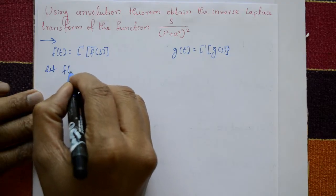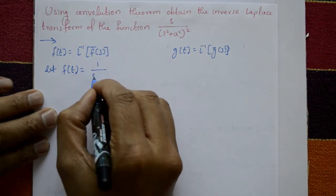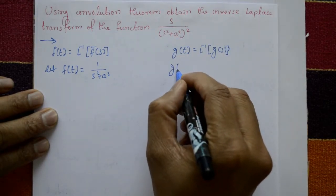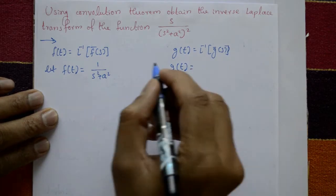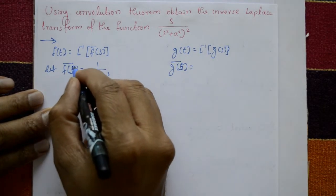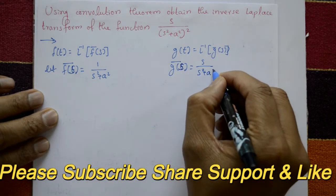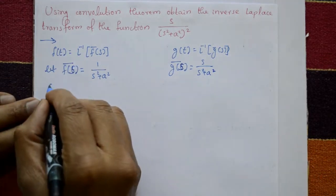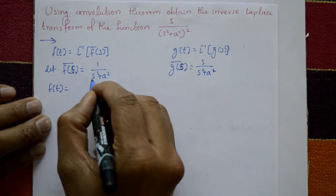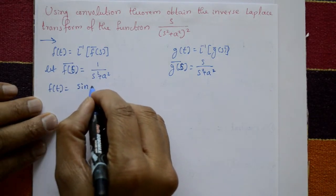Now f(t) corresponds to the first part: F̄(s) = 1/(s²+a²), and Ḡ(s) = s/(s²+a²) whole square. Now find f(t): f(t) = inverse Laplace of F̄(s), that is, inverse of 1/(s²+a²) is sin(at)/a.